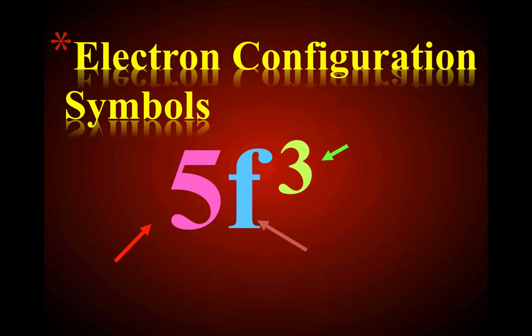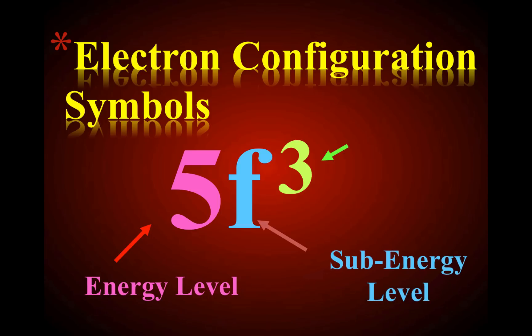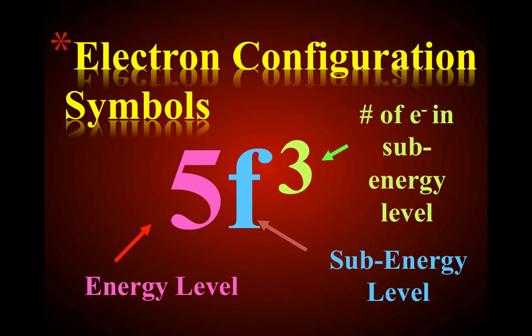Electron configuration symbols: the large number represents the energy level, the letter represents the sub-energy level, and the superscript represents how many electrons are in that sub-energy level. For example, 5f³ means we're talking about an electron in the fifth energy level, in an F sublevel, and there are three electrons in the 5F sublevel.